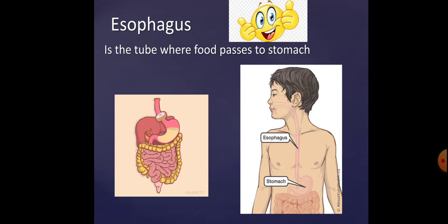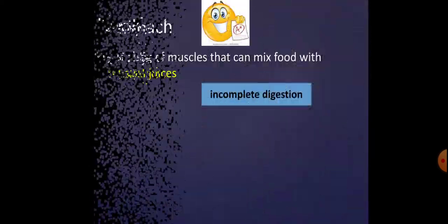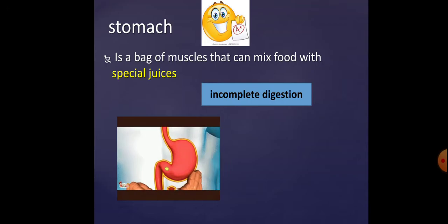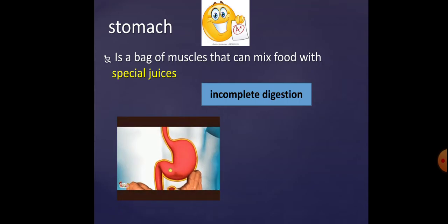Then comes the stomach. The stomach is a bag of muscles that mixes the food with special juices. When the food reaches the stomach, it mixes with those special juices and digests into simpler parts. However, we call this incomplete digestion — it is not completed yet in the stomach.